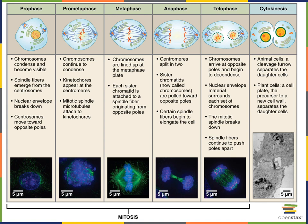Then during anaphase, the chromosomes are pulled apart. The replicated chromosomes that were lined up during metaphase had two copies of each chromosome known as sister chromatids, and those sister chromatids separate during anaphase. Then telophase is when the nuclear envelope forms around the chromosomes and those chromosomes start to uncoil and decondense, returning to the uncondensed state as chromatin spread through the nucleus. Telophase is the last phase of mitosis.